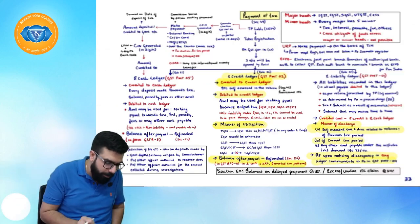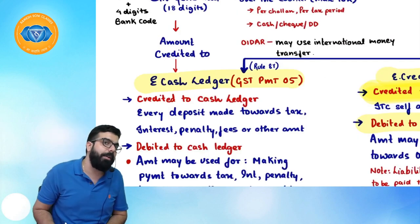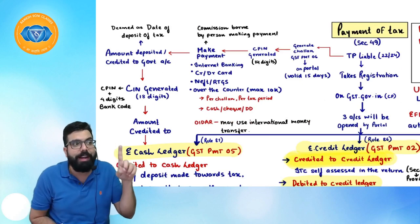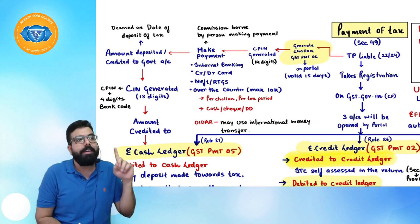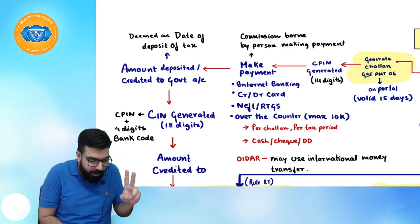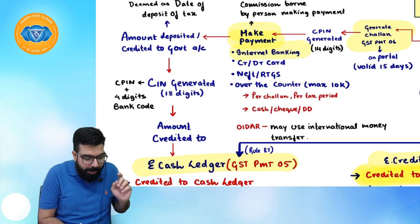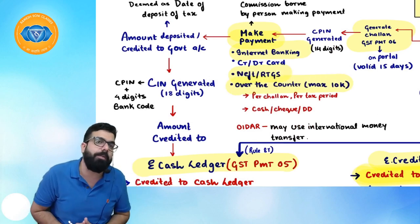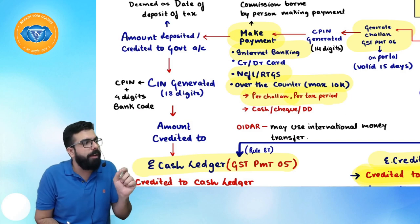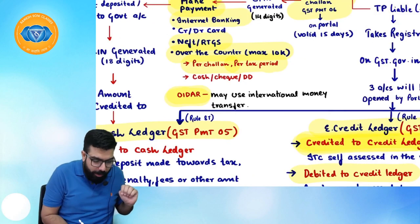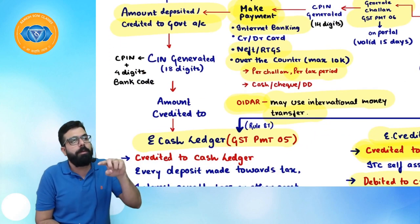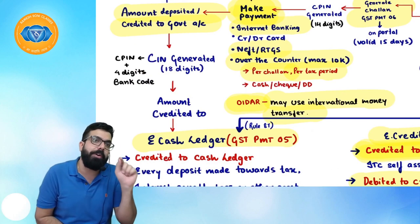E-cash ledger is governed by Rule 87. To deposit an amount, the taxable person must first go online and create a challan in form PMT-06. The challan is valid for 15 days. Once the challan is generated, a CPIN (Common Portal Identification Number) is generated. Payment can be made through net banking, NEFT, RTGS, or over-the-counter (maximum ₹10,000 per challan per tax period in cash, cheque, or DD).